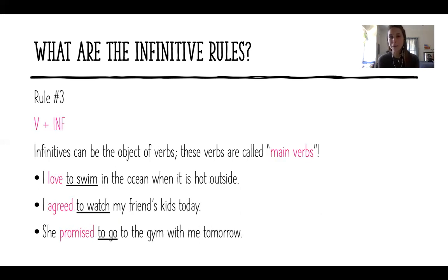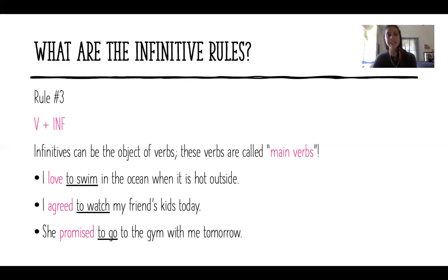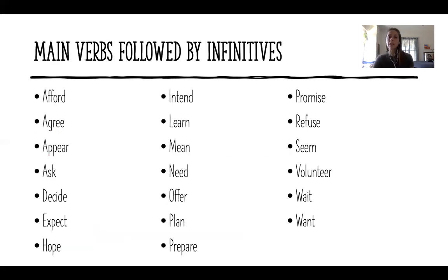Rule number three: verb plus infinitive — infinitives can be the object of verbs, and these verbs are called main verbs. 'I love to swim in the ocean when it's hot outside' — 'love' is the main verb and 'to swim' is the infinitive. 'I agreed to watch my friend's kids today' — 'agreed' is the main verb and 'to watch' is the infinitive. 'She promised to go to the gym with me tomorrow' — 'promised' is the main verb and 'to go' is the infinitive. We can tell whether to use a gerund or infinitive based on the main verb.